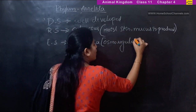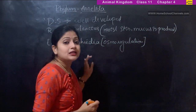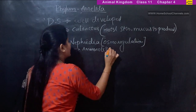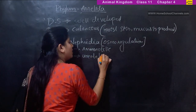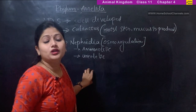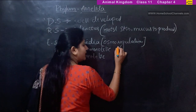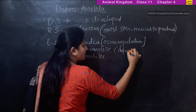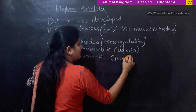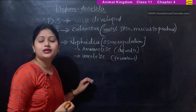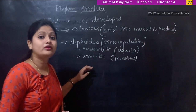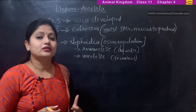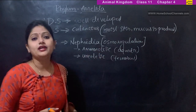The excretory system uses structures called nephridia, which are present for excretion and also help in osmoregulation. The excretory products are of two types: ammonotelic and ureotelic. Aquatic members excrete nitrogenous waste as ammonia (ammonotelic), while terrestrial members excrete it as urea (ureotelic).